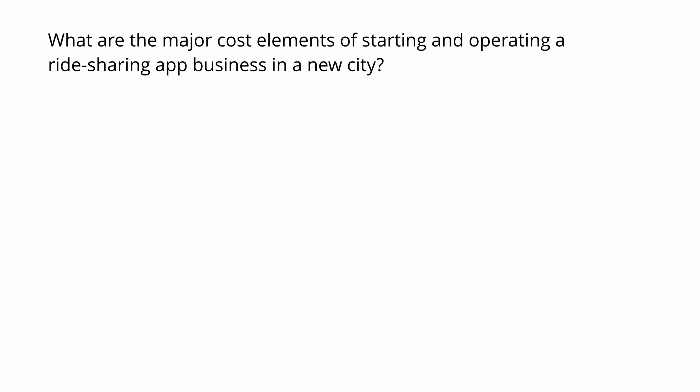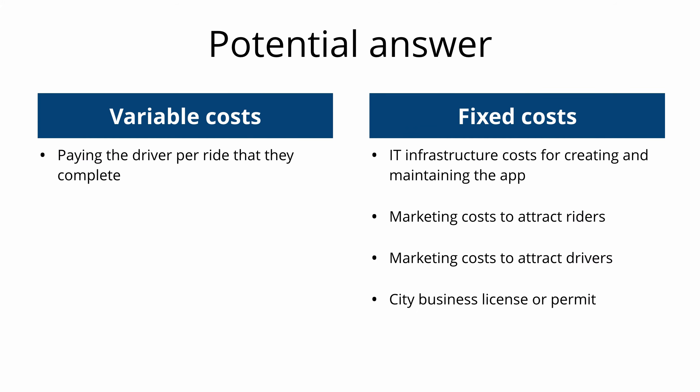What are the major cost elements of starting and operating a ride-sharing app business in a new city? Pause the video now to answer this question. You can structure your thinking by breaking down costs into variable costs and fixed costs. Variable costs would be the costs associated with paying the driver per ride completed. Fixed costs include the IT infrastructure for creating and maintaining the Rider app, marketing costs to attract riders, marketing costs to attract drivers, and potentially costs for a city business license or permit.